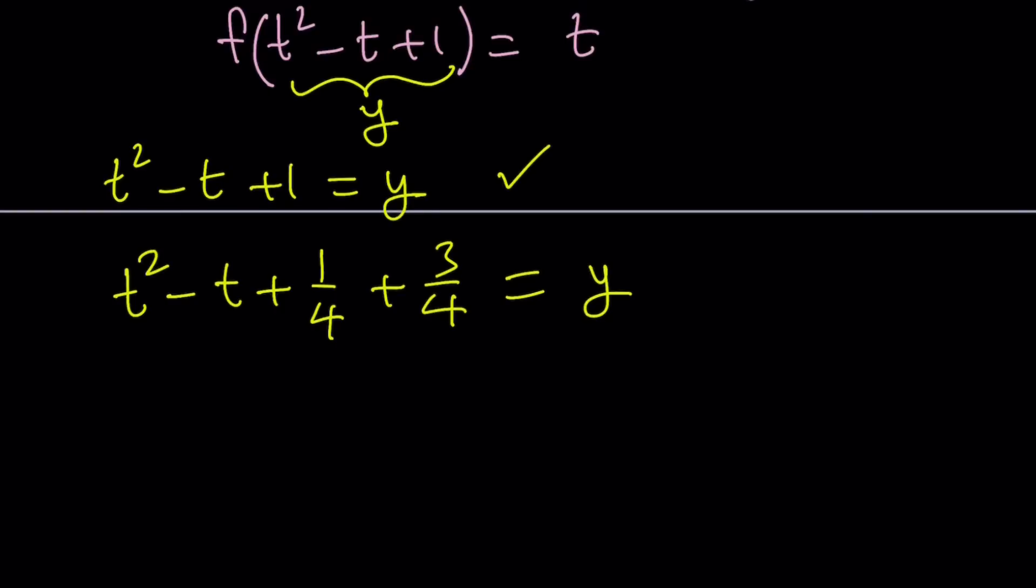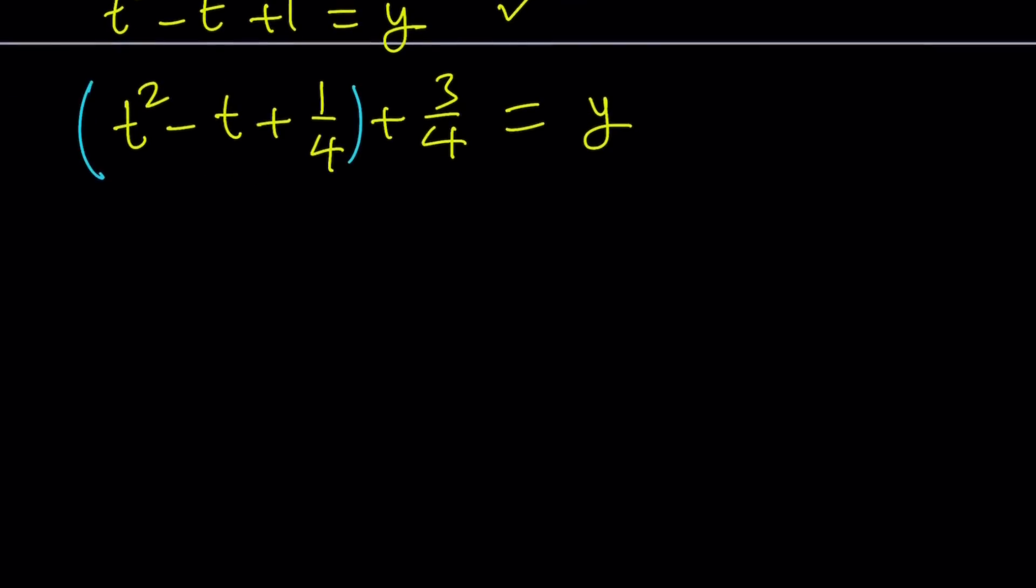Now the idea is to turn this into a perfect square plus something. So this part can be written as t minus 1 half squared, which is a perfect square, plus 3 fourths equals y.